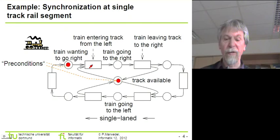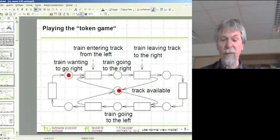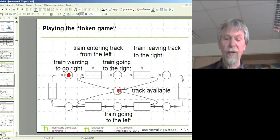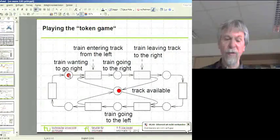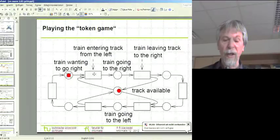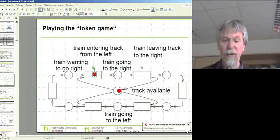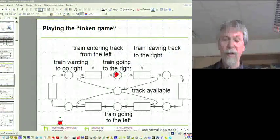Now in order to model this synchronization we can play the so-called token game. In the token game we are moving around these tokens. So in this particular situation we have a situation in which the two conditions that are required for that event to take place are both met. And as a result of that we can actually have a train that is entering that segment of the track. And as a result of that, that track will be no longer available. So the train will go to the right.